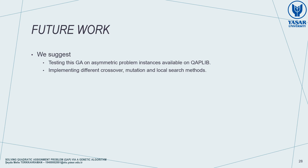For future work, we suggest testing this GA on asymmetric problem instances available on QAPlib. Also, implementing different crossover, mutation, and local search methods may increase the success rates.